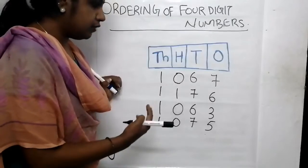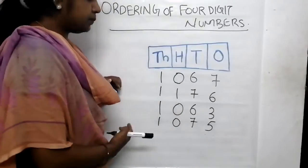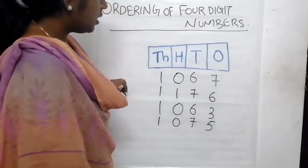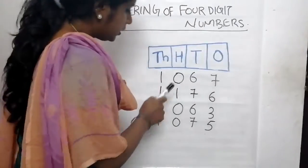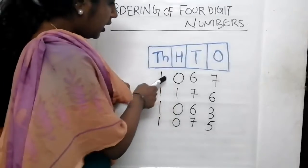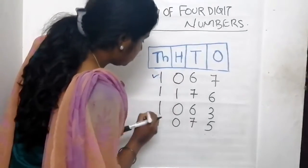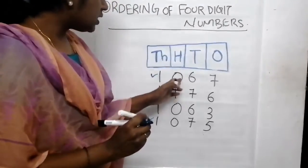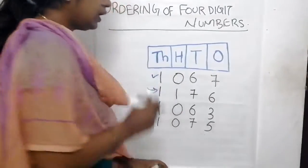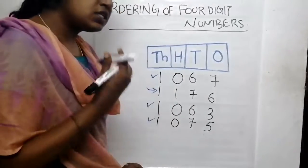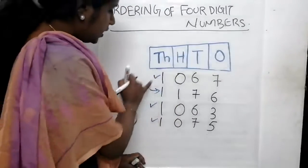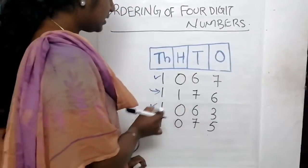We will move to the next place - hundreds. What are the numbers in hundreds place? Here it is 0, here it is 1, here it is again 0, and here it is again 0. These 3 numbers have 0 in their hundreds place, and this number has 1 in hundreds place. In between 0 and 1, which number is less? Of course 0 is less than 1, so these 3 numbers will be less than this number.